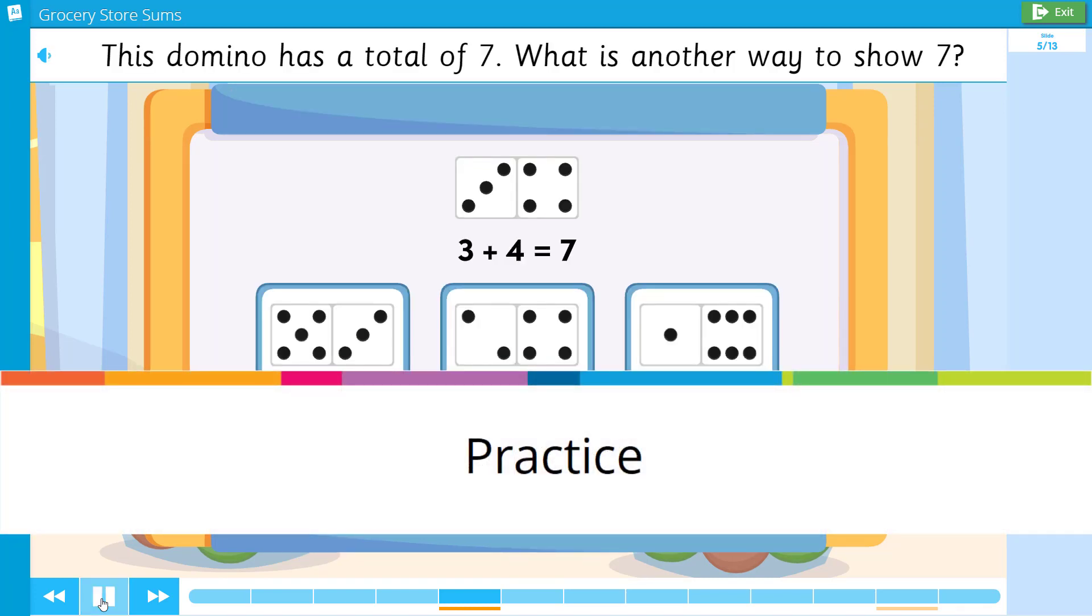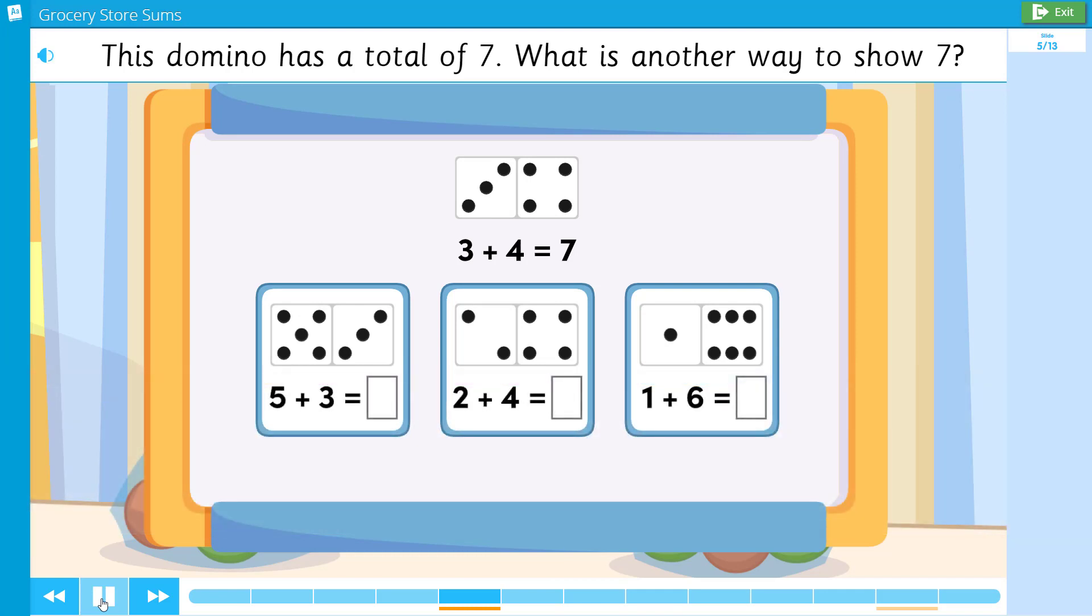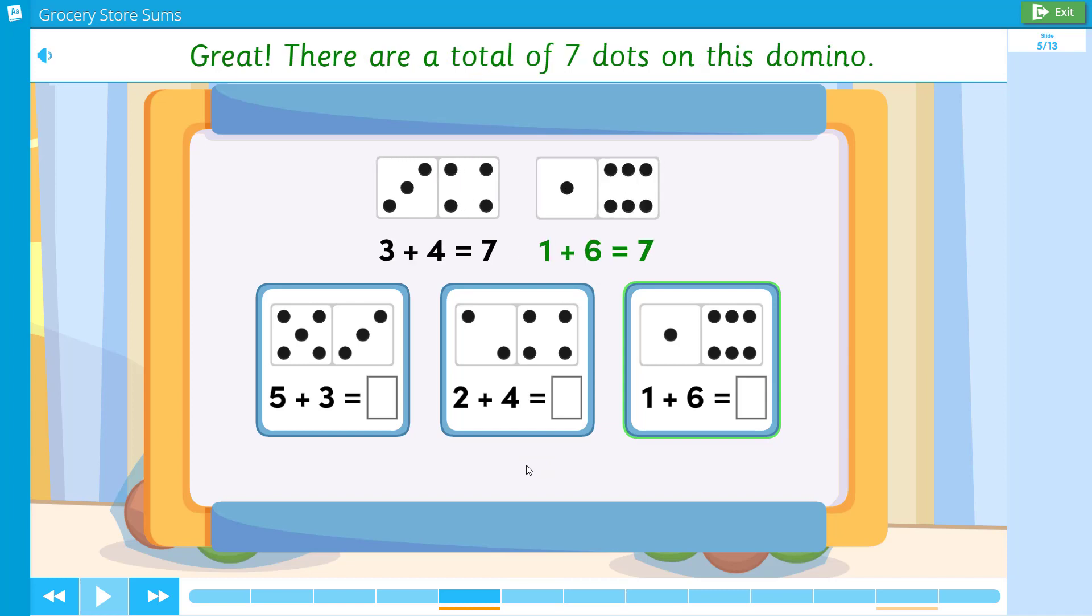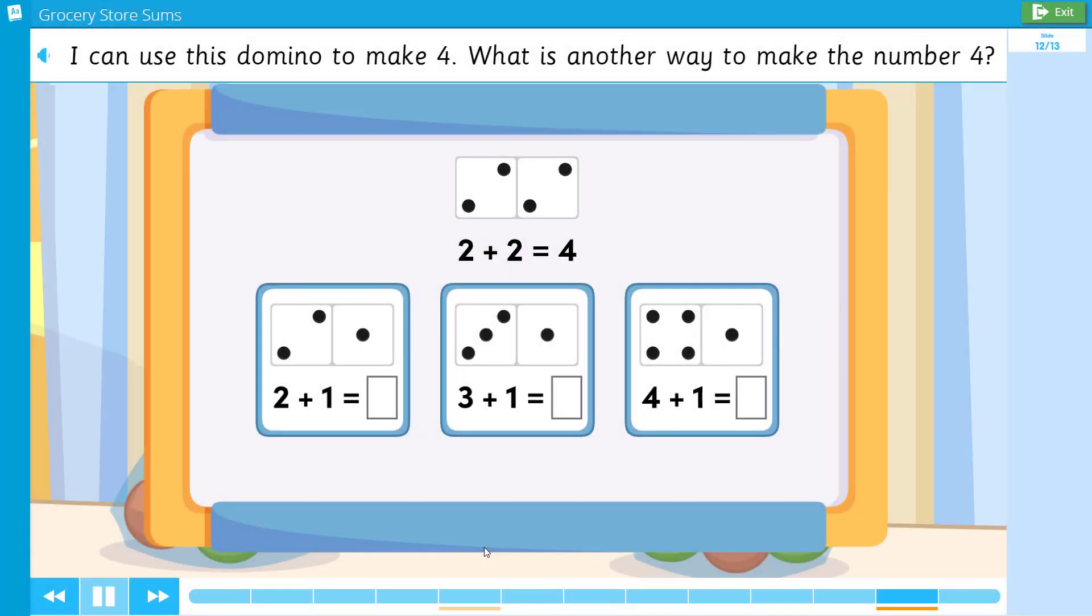This domino has a total of seven dots. What is another way to show seven? Three plus four equals seven. Great! There are a total of seven dots on this domino.